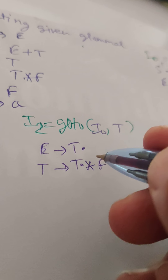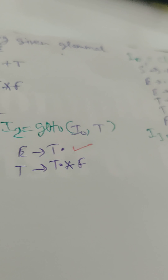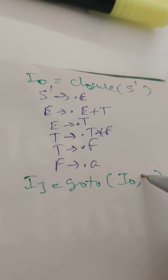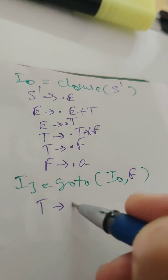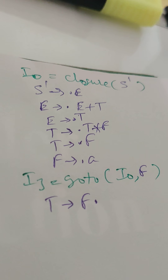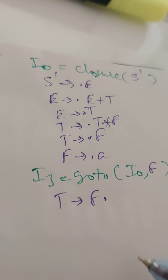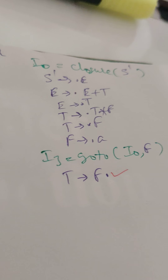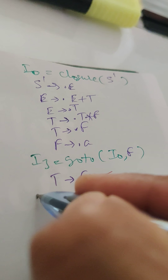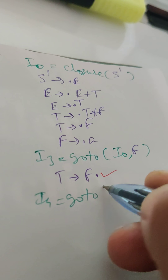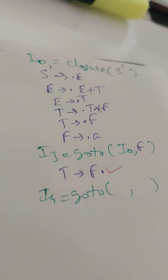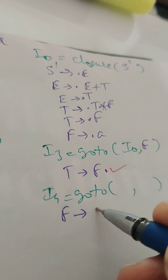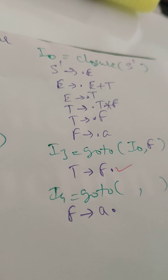Item number I3 is the GOTO of I0 on F, giving T → F. — this rule finishes here. Item number I4 is the GOTO of I0 on terminal a, giving F → a. — this rule also finishes here.